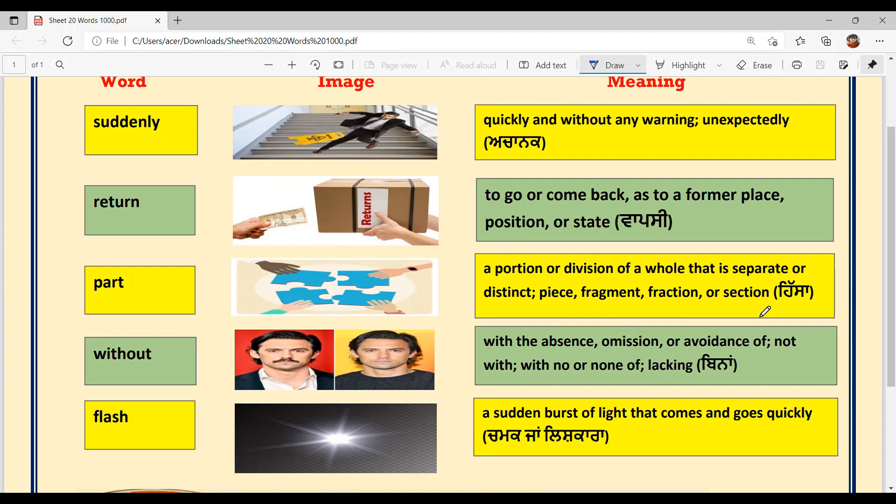Thik hai? Jodho ase kis cheeze de hissay kar de haan, yaan nho piece cha divide kar rhen haan, taan ase nho part word nao use kar aange. Now see, the parts of the puzzles are not assembled. Ki puzzles de jo parts nae assembled nahi haan.